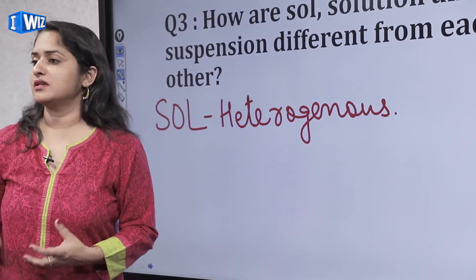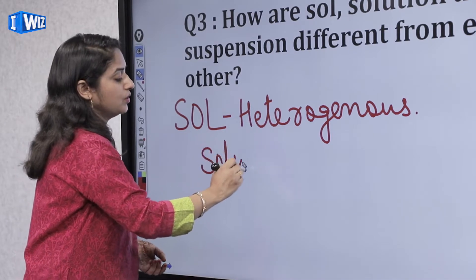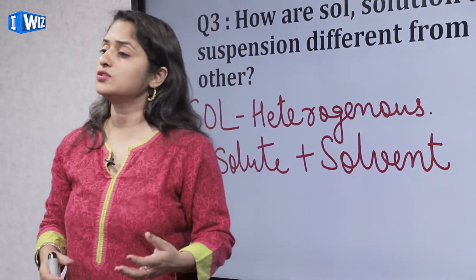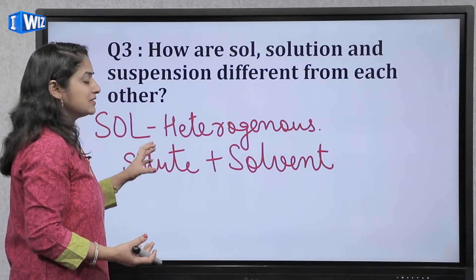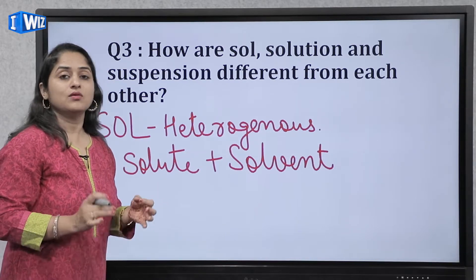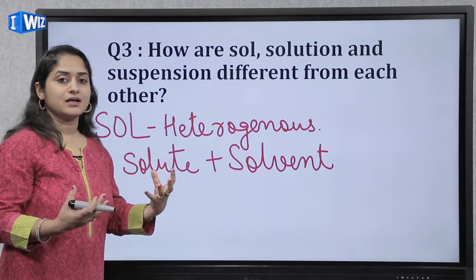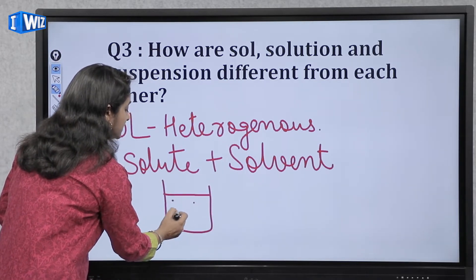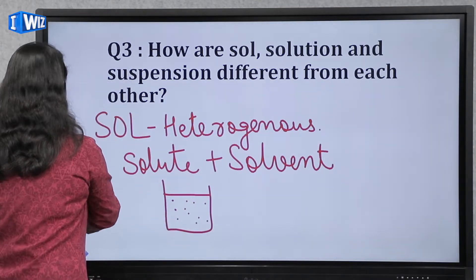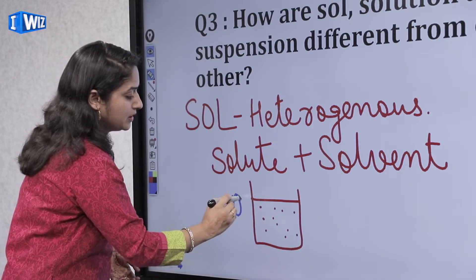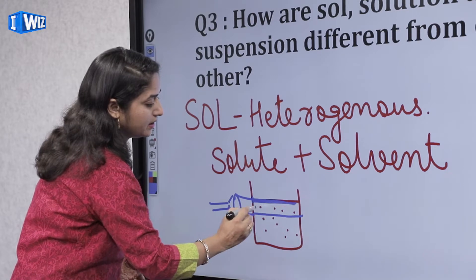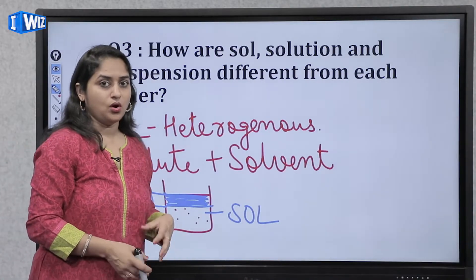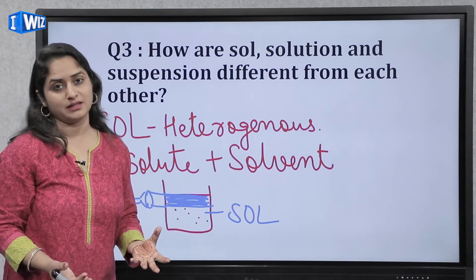Solution ke components kya hote hain? Ek hota hai solute aur ek hota hai solvent. Solute hameisha woh hota hai jo lesser quantity mein hota hai, solvent woh hota hai jo greater quantity mein hota hai. Colloidal solution mein jo particles hain woh settle down nahi hote, woh light ko scatter kar sakti hain. Agar aapne ek beaker mein colloidal solution liya aur us mein se light pass karte ho, toh woh light ka path visible hota hai — aapko dikhe ga ki yahaan se light ja rahi hai. In the case of sol or colloidal solution, this is not possible in a true solution. Aur suspension toh opaque hoti hai, us mein se light nahi pass karegi.